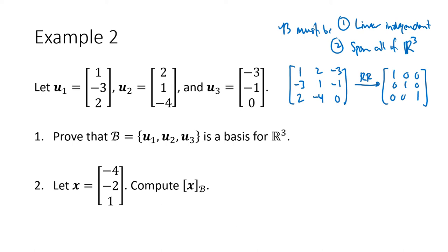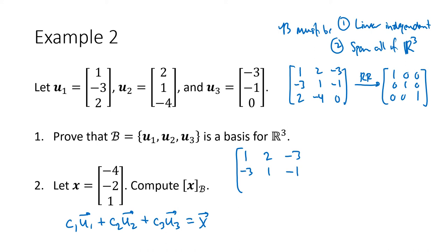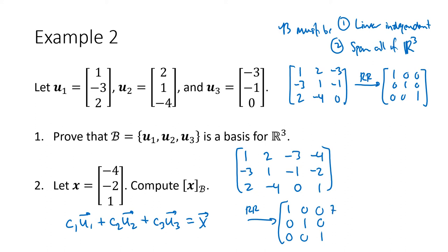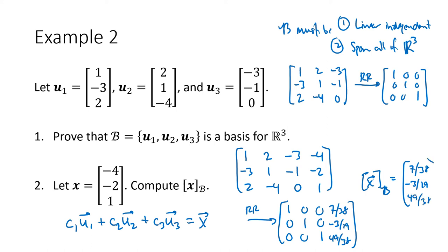Now for part two: to compute the coordinates of x in basis B, we want scalars c1, c2, c3 such that c1·u1 + c2·u2 + c3·u3 = x. The augmented matrix for that equation is the matrix whose columns are those u vectors, with augmented column x = (−4, −2, 1). When we row reduce, as expected the first three columns give the identity matrix, and the augmented column gives 7/38, −3/19, and 49/38. So my coordinate vector x in basis B is (7/38, −3/19, 49/38).